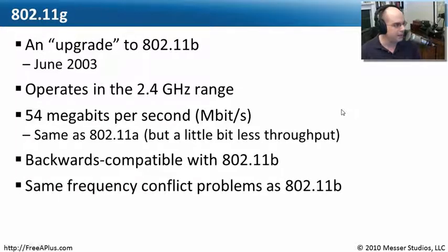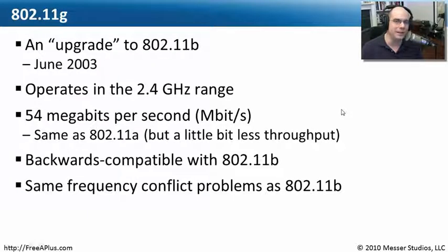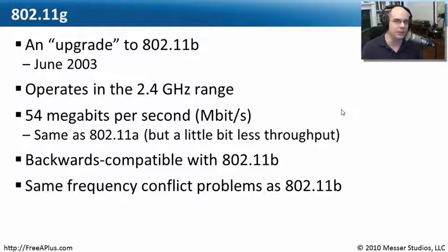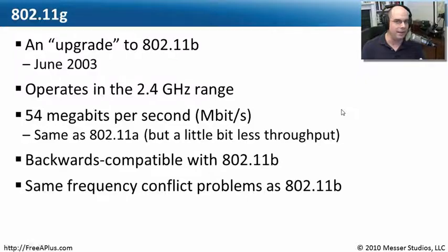Because 802.11g still operates at 2.4 gigahertz, you still had the same frequency problems as 802.11b. We still needed something that could get around some of these issues, and that's partly why 802.11a remained in use — nobody wanted conflicts. So there had to be a happy medium somewhere, and that led to the new format called 802.11n.